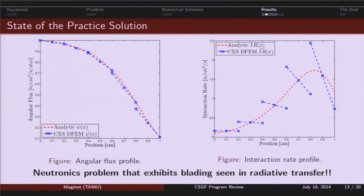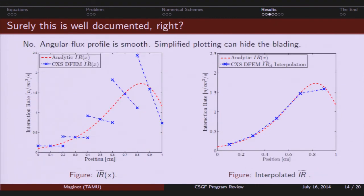So, for this problem, the red dash line is the analytic solution. The blue dash line is the finite element solution when you assume a cell wise constant cross section. So, on the left, you have the radiation profile, the angular flux. On the right, you have the interaction rate where you see the left is kind of like my radiative transfer problem. It's relatively smooth. Yeah, it's got some discontinuities, but it's a low resolution. And, on the right, I see all this blading. So, I've found my neutronics problem that exhibits blading seen in a radiative transfer, suggesting that my radiative transfer results might not be junk after all.